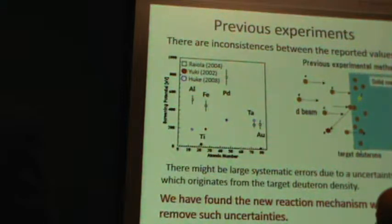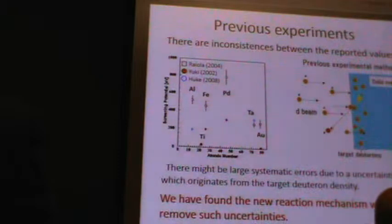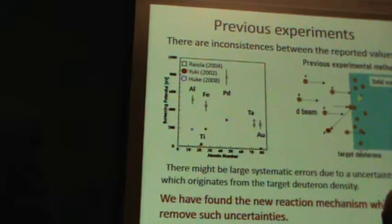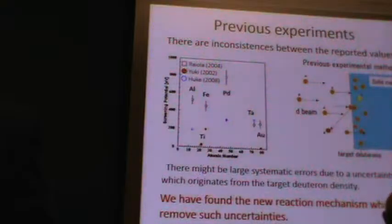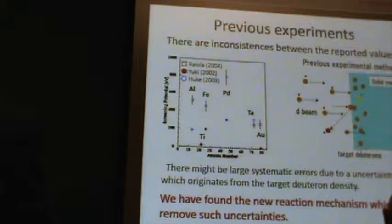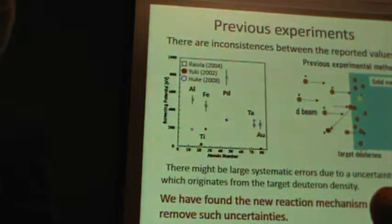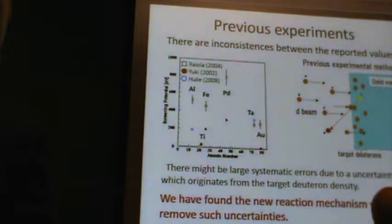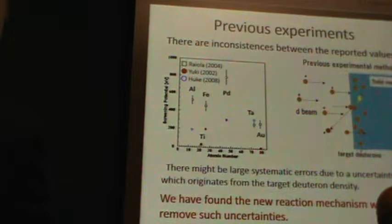This figure shows the experimental method for the previous solid metal experiment. When the solid metal is bombarded by the deuteron beam, these deuterons will stop and accumulate at the surface of the metal. These deuterons are used as the target deuterons. The target deuteron density is affected by various factors, so it's difficult to know the precise target deuteron density. We introduce a new reaction mechanism which can remove such uncertainties.